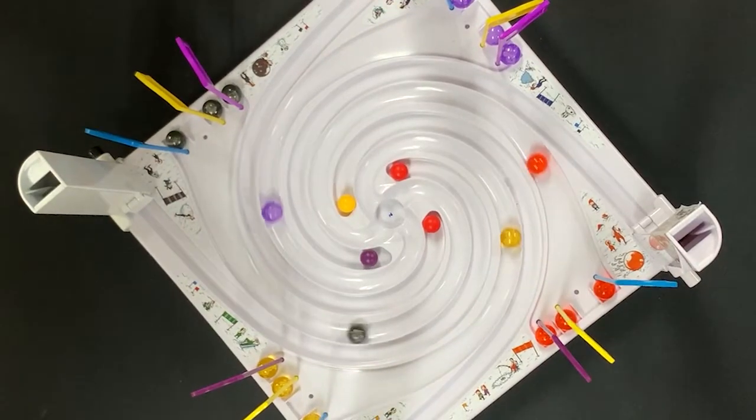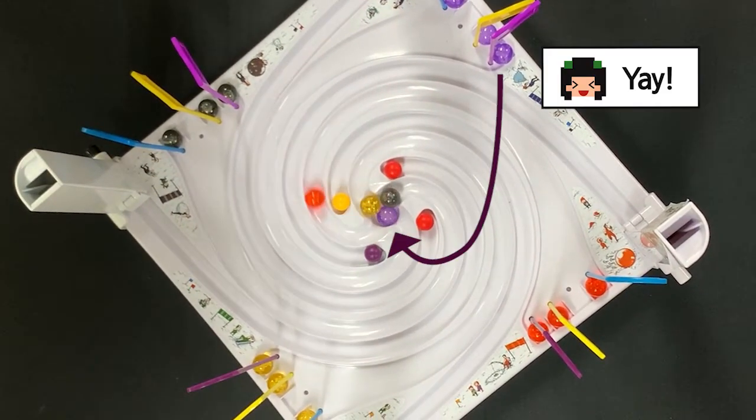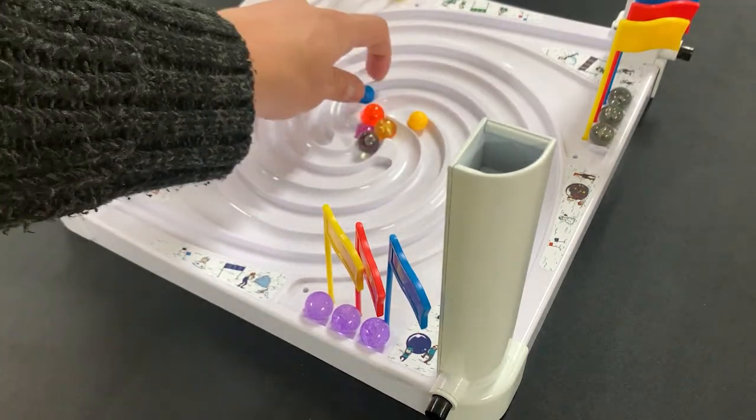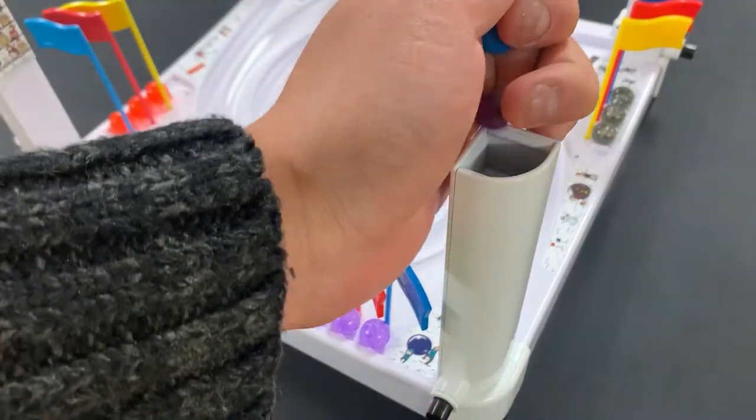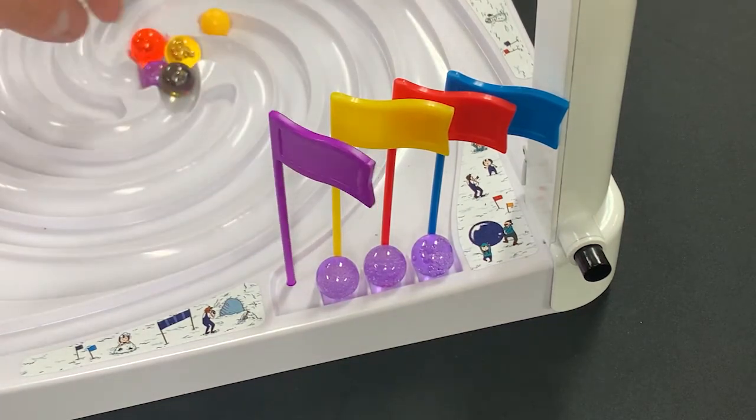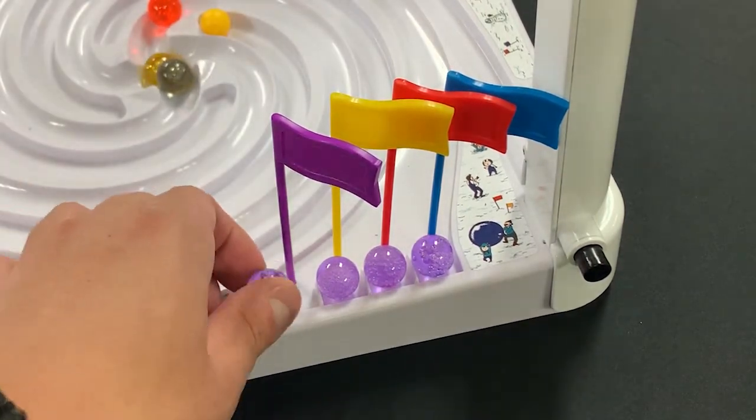The first player who puts his player marble in the middle of the game board gets one metal token and chooses two rails from the game board and takes all score marbles into your marble launch tower. After that, put back the flag and player marble in their starting position and continue from the player who just won the score marble.